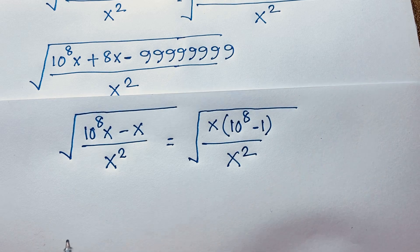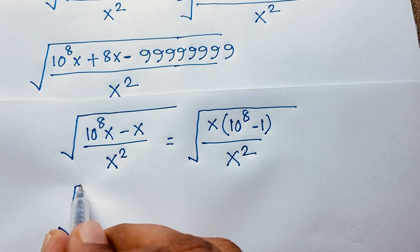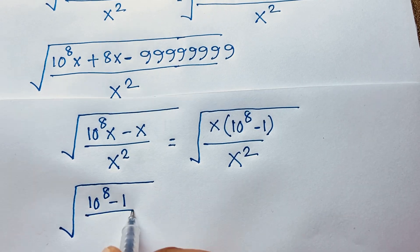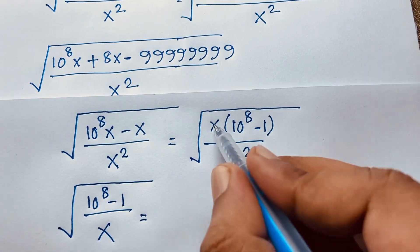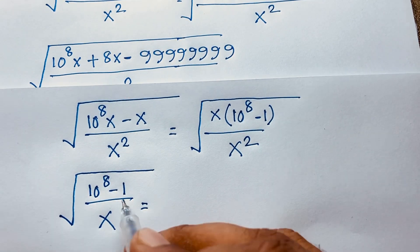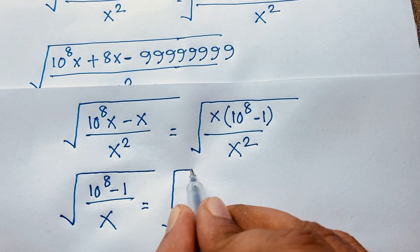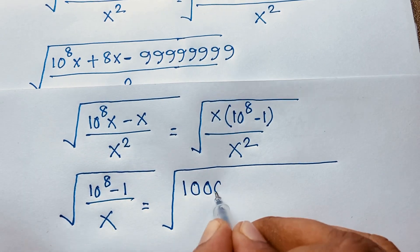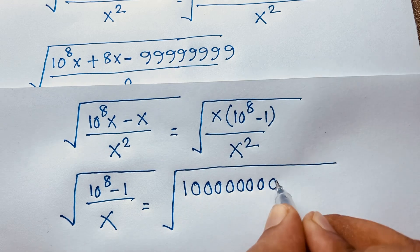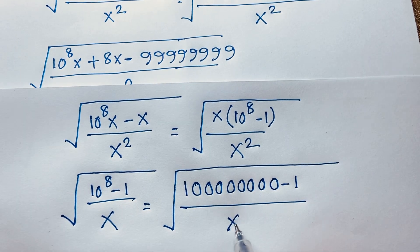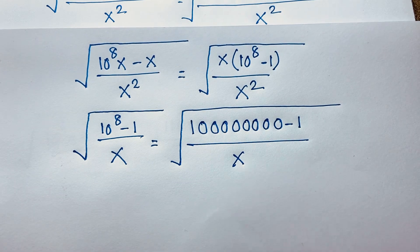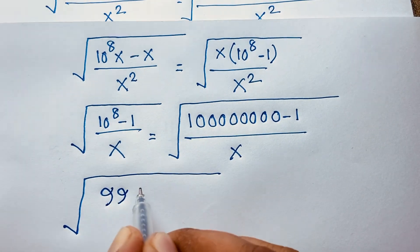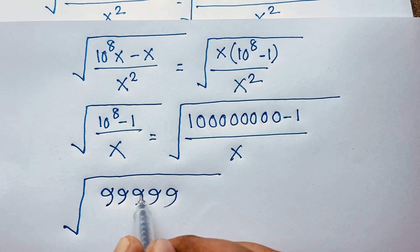Now you can see this x, x squared divided by this x, it will be x. So we find out here it will be square root of 10 to the power 8 minus 1 over x — because this x squared divided by this x it will be x. Then at this moment if I evaluate this expression, you can see it will be square root: 10 to the power 8, it will be 1 0 0 0 0 0 0 0 0, minus 1 over this x. Now you can see square root down, it will be this minus this — here is 9 9 9 9 9 — 1 2 3 4 5 6 7 8.